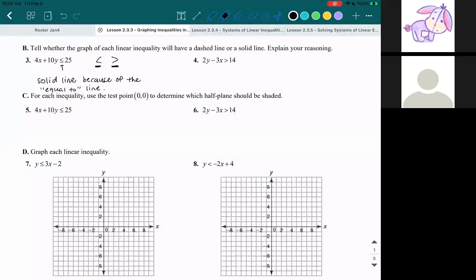Now let's take a look at number four. Do you see the equal to line here? I don't. I just see greater than. So if you have greater than or you just have less than, there's no equal to line.